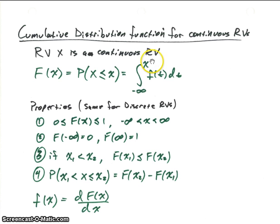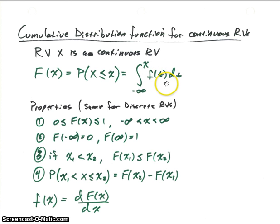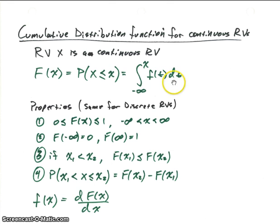Because the integral has x as its upper limit, we can't use x as our integration variable as well. So we had to make a change of variable — we change it to t. You can really use any variable you want in here; I'll be using t.